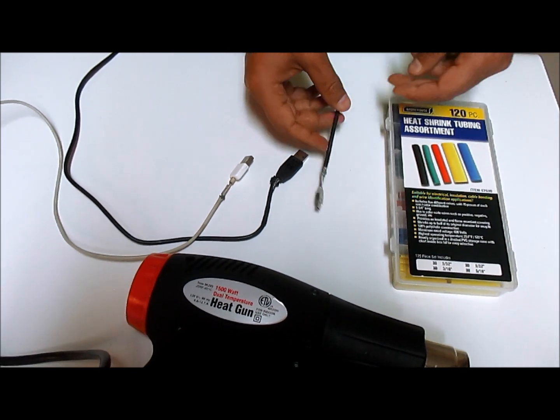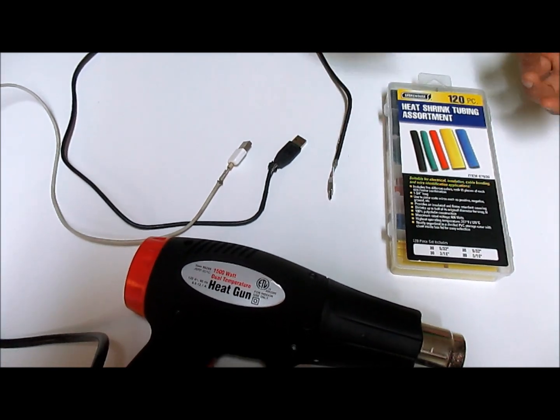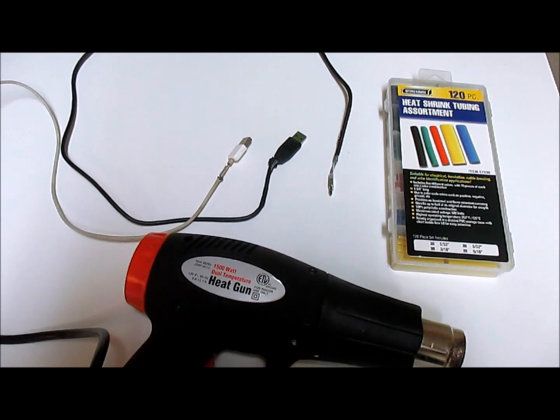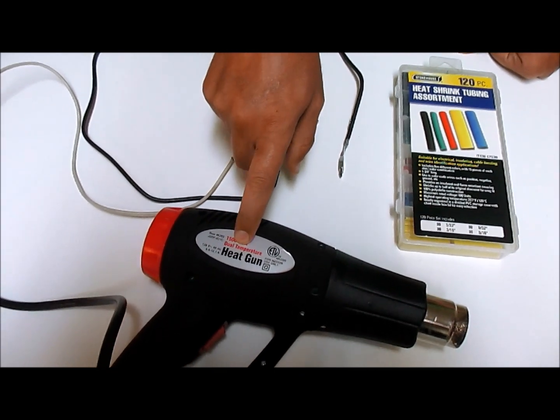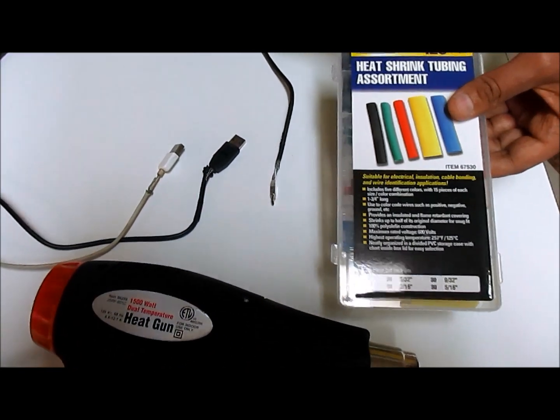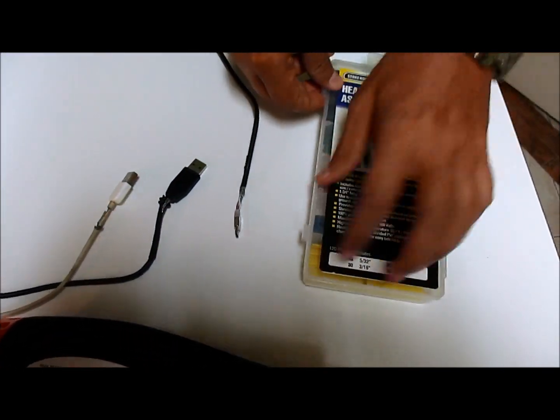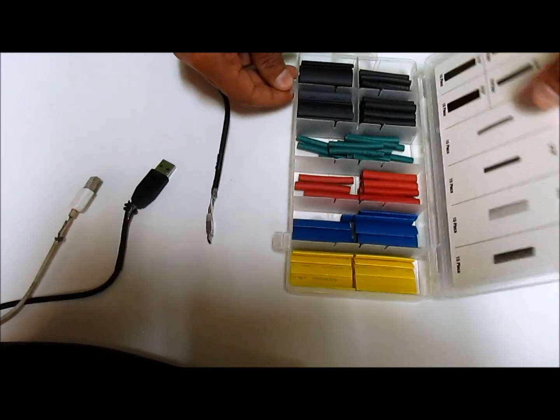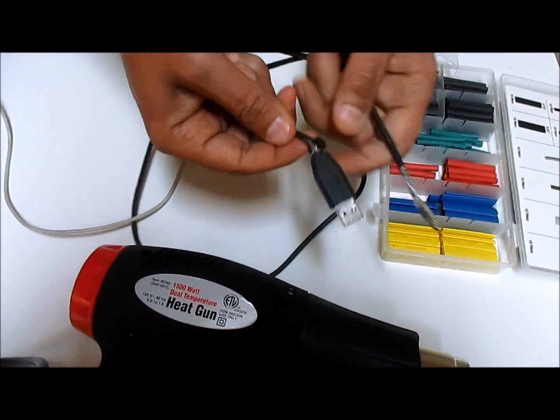You're going to need a couple things: you'll need a heat gun as you can see here, and you'll need some heat shrink tubing. This is a 120 piece set with a bunch of different sizes. We're going to fix both sides - this side and this side. These are going to be 30 seconds because you're going to fit it through here.